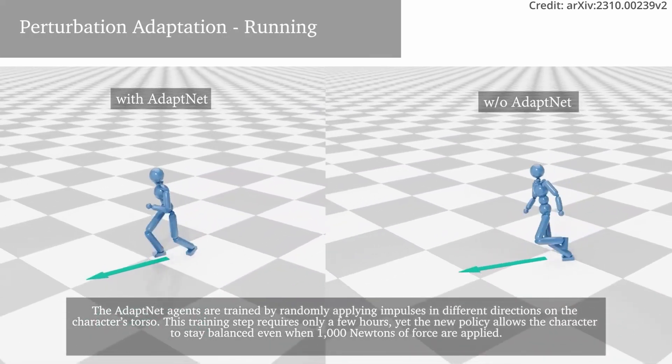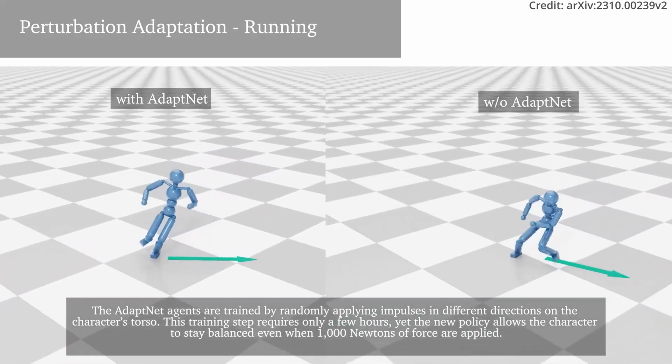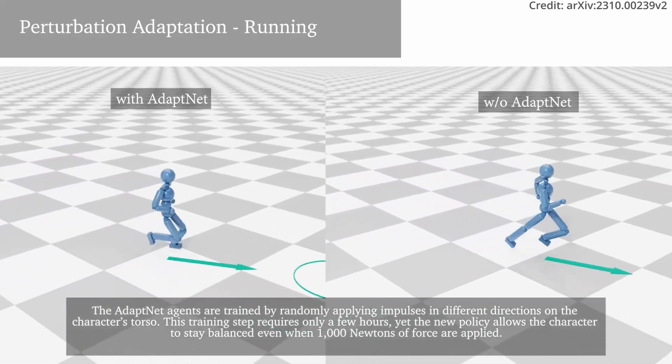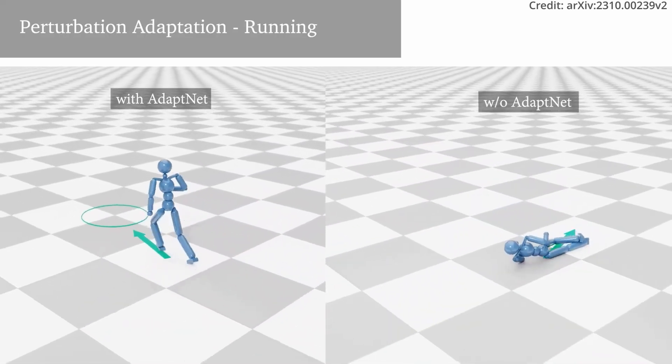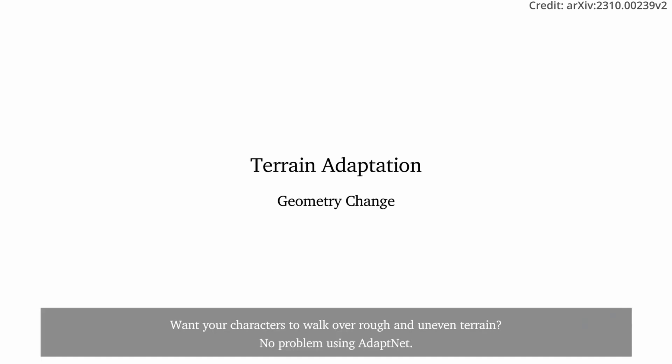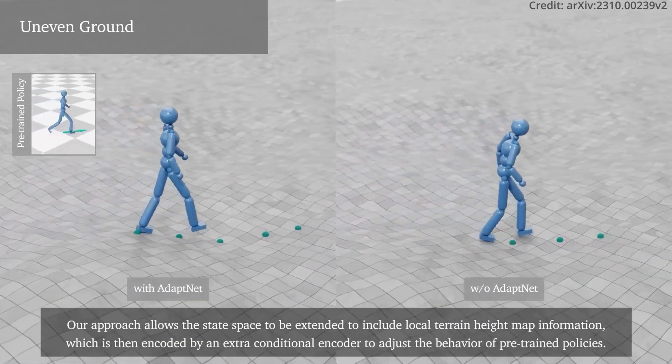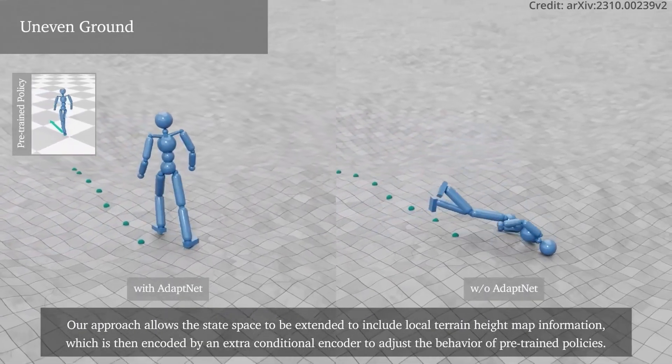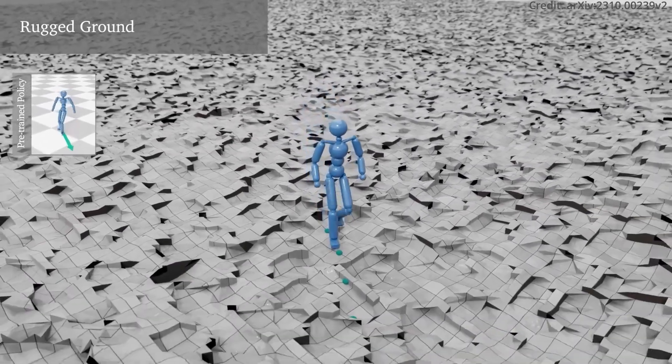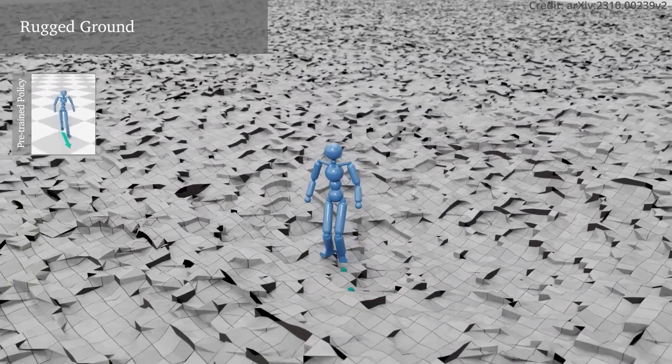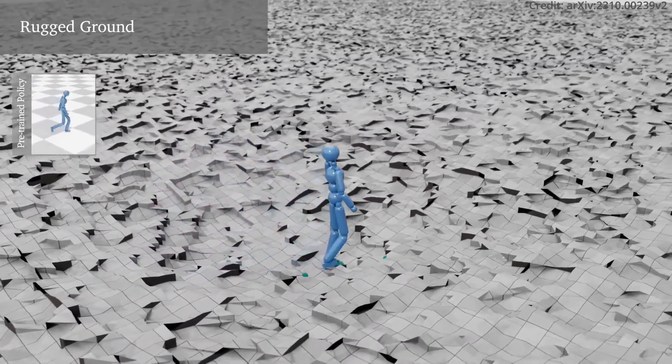Importantly, whether it's adapting to changes in friction coefficients or navigating through rough and uneven terrains, AdaptNet fine-tunes control policies to accommodate environmental changes. By introducing a height map as an additional control input, characters can traverse and navigate through extremely challenging terrains where pre-trained policies might fail, showcasing remarkable adaptability to environmental variables.